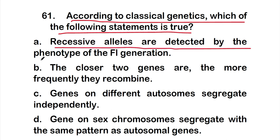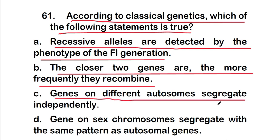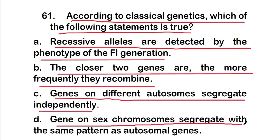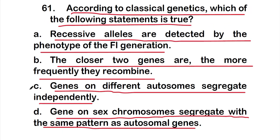Option B: the closer two genes are, the more frequently they recombine. Option C: genes on different autosomes segregate independently. Option D: genes on sex chromosomes segregate with the same pattern as autosomal genes. The right answer is Option C — genes on different autosomes segregate independently.